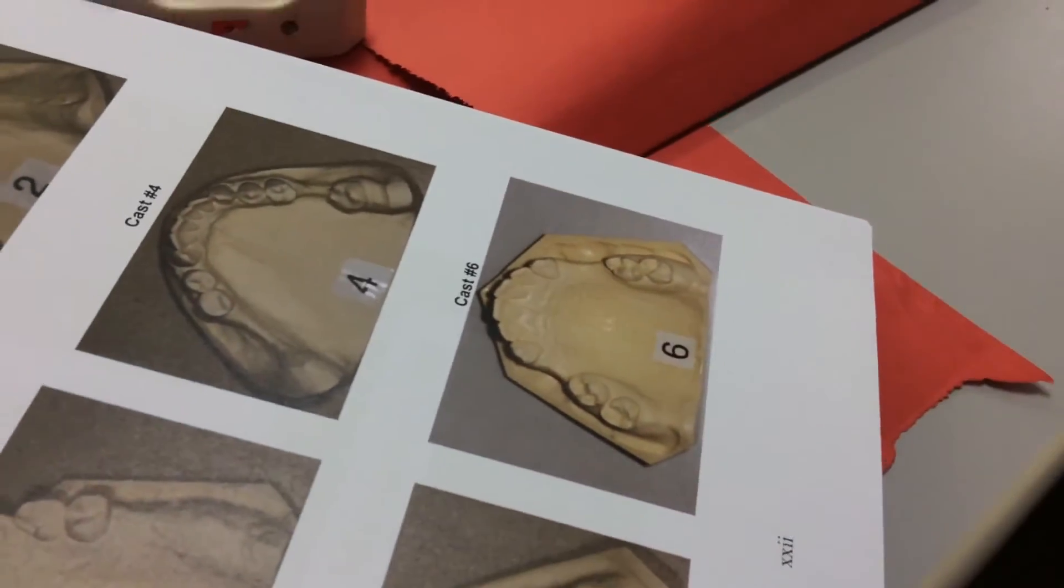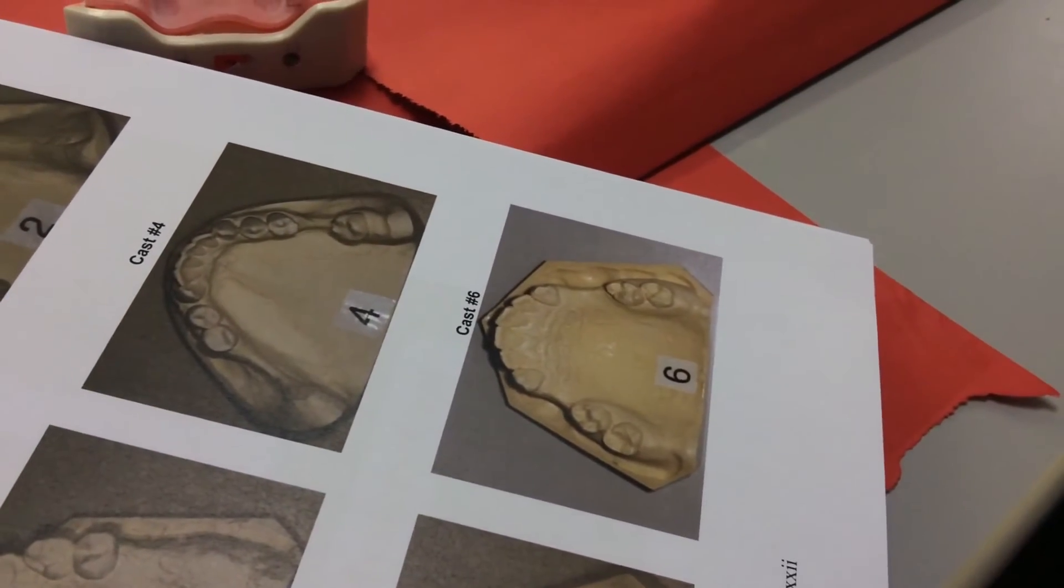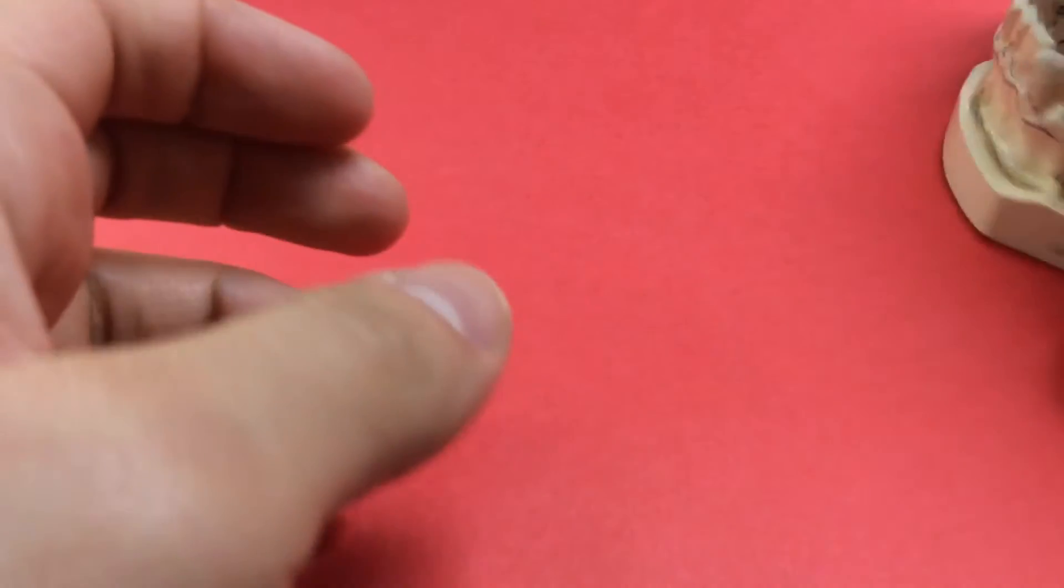Okay, so cast number six is a maxillary. So take a look at it tonight. Think about it so that you can come in and kind of be prepared. The anterior teeth are canines. It's tooth bound.